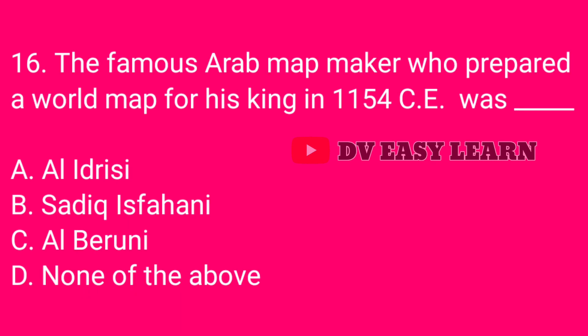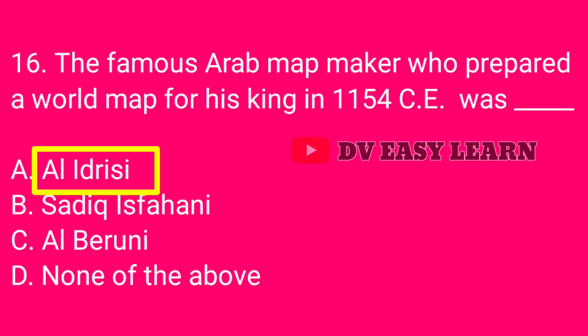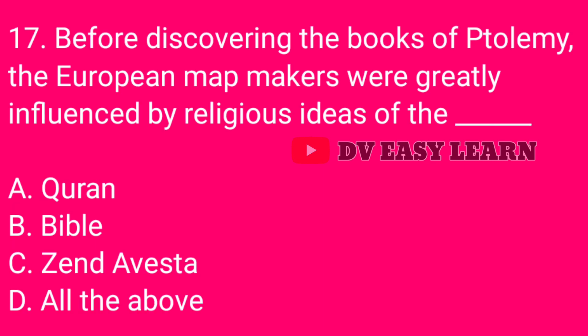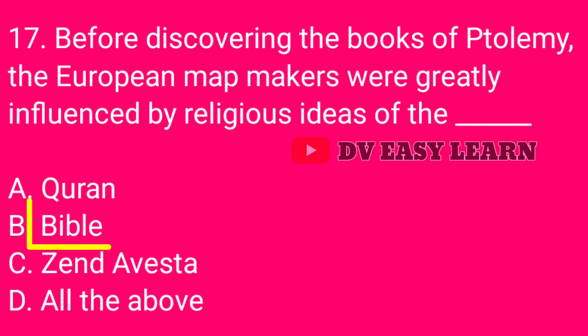Question number 16: The famous Arab mapmaker who prepared a wall map for his king in 1154 Common Era was — correct answer: Al Idrisi. Question number 17: Before discovering the books of Ptolemy, the European mapmakers were greatly influenced by the religious ideas of the — correct answer: Bible.